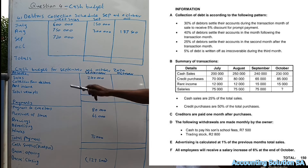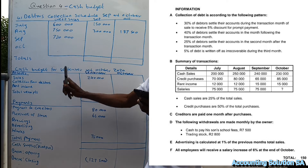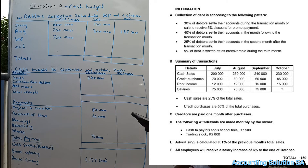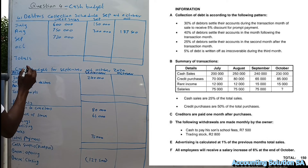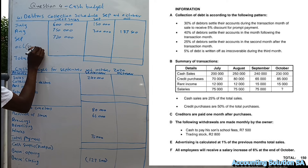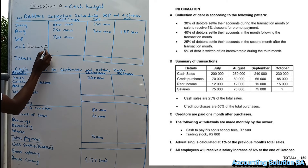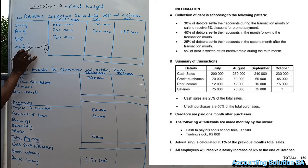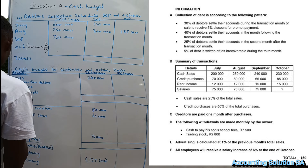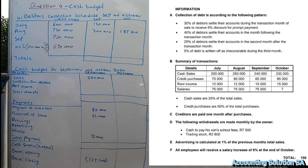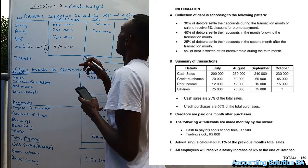They give us credit sales for July, August, and September, but not for October. To calculate October's credit sales: we have cash sales of 280,000 and cash sales are 25 percent of total sales, so we need to find 75 percent. We say cash sales divided by 25 multiplied by 75, which gives us 690,000. Now we have our credit sales figure for October.